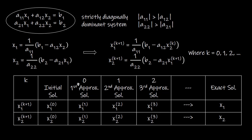We carry out the iterative procedure until we get the required approximate solution, meaning the error between the exact solution and the approximate solution should be very small. If you don't know the exact solution, calculate the error between two consecutive approximate solutions — if that error is small, you can take that approximate solution as your required solution.